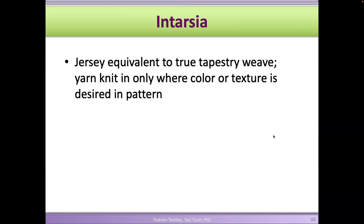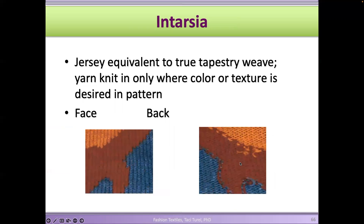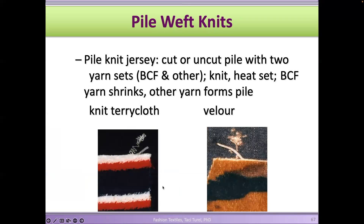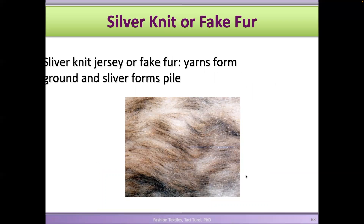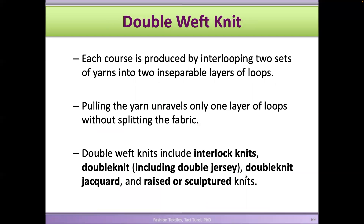Intarsia is another type of fabric — it's kind of a tapestry weave. This is the face, this is the back. Knit jersey can be made with cut piles or uncut piles — these are some more examples of pile fabrics. This is a knit terrycloth fabric and this is a velour fabric, with a velvet-like look from the piles. This one is created by using extra yarns forming piles that give a faux fur look, with a jersey design in the background.